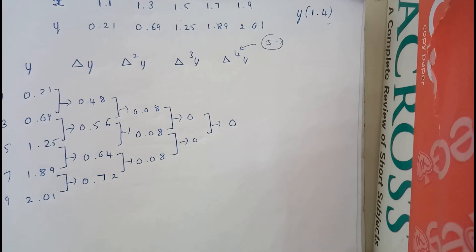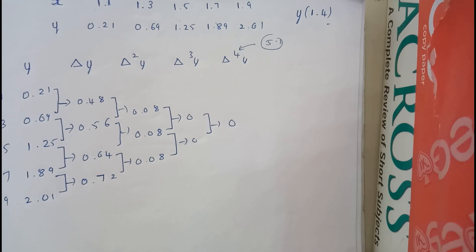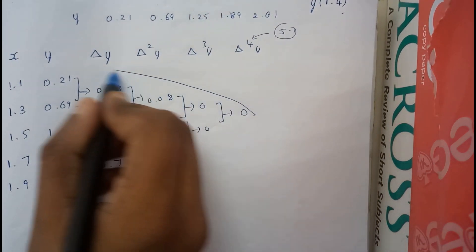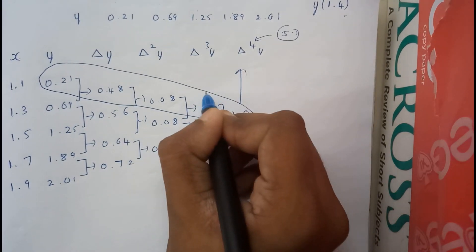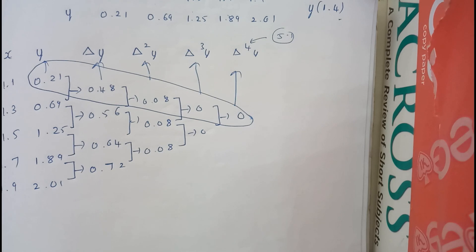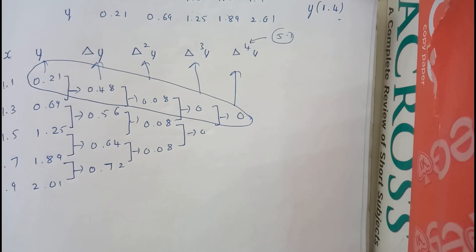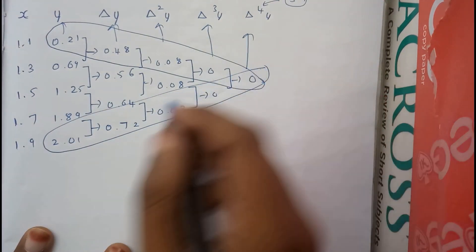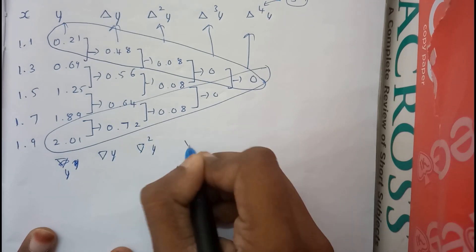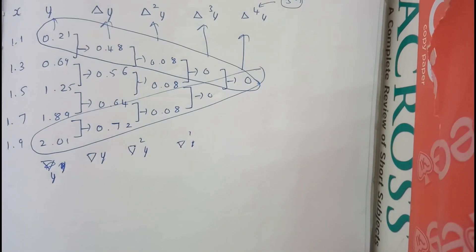When using Newton forward interpolation formula, you consider the upper triangle of the table — those values represent y₀, Δy₀, Δ²y₀, and so on. When using Newton backward interpolation formula, you use the lower triangle values, denoted by ∇yₙ, ∇²yₙ, ∇³yₙ, and so on.